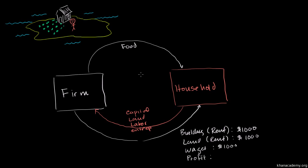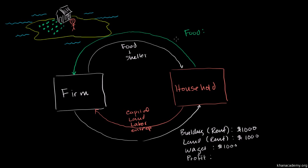This is a nice, simple example. Obviously, once you expand beyond one person or one firm, things get complicated fast. So he's getting food and shelter, and in exchange he's going to pay the firm. There isn't much of a market here — he is the market. For the food, he decides to pay $2,300 a year, and for the use of the building the firm is renting to him, he's paying $1,200 rent.